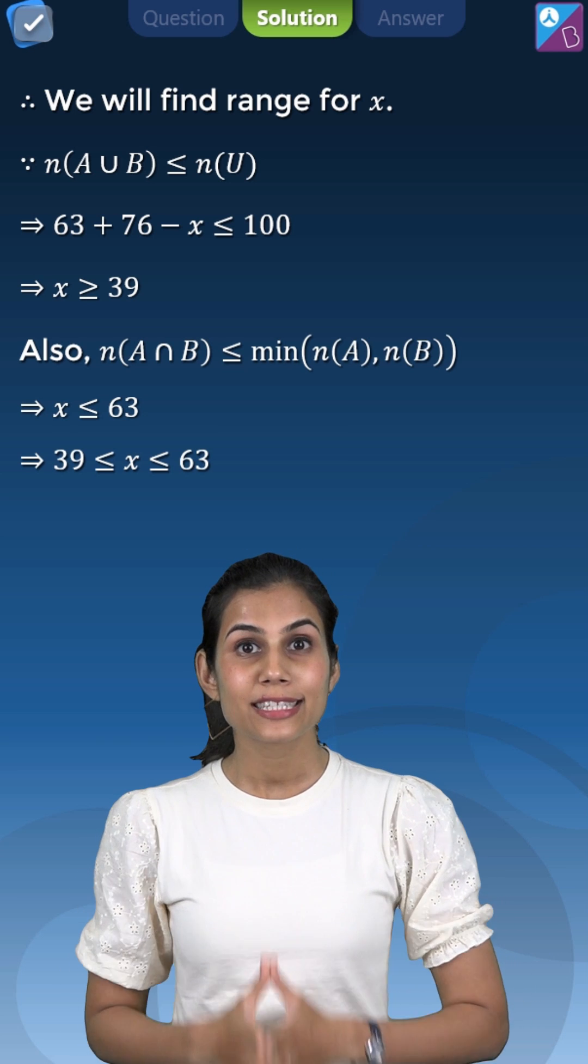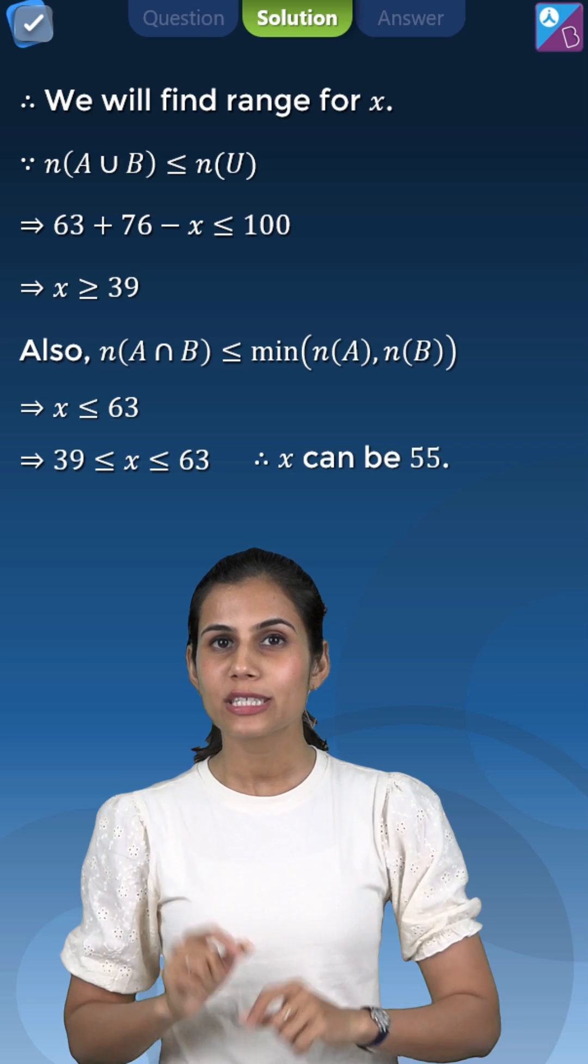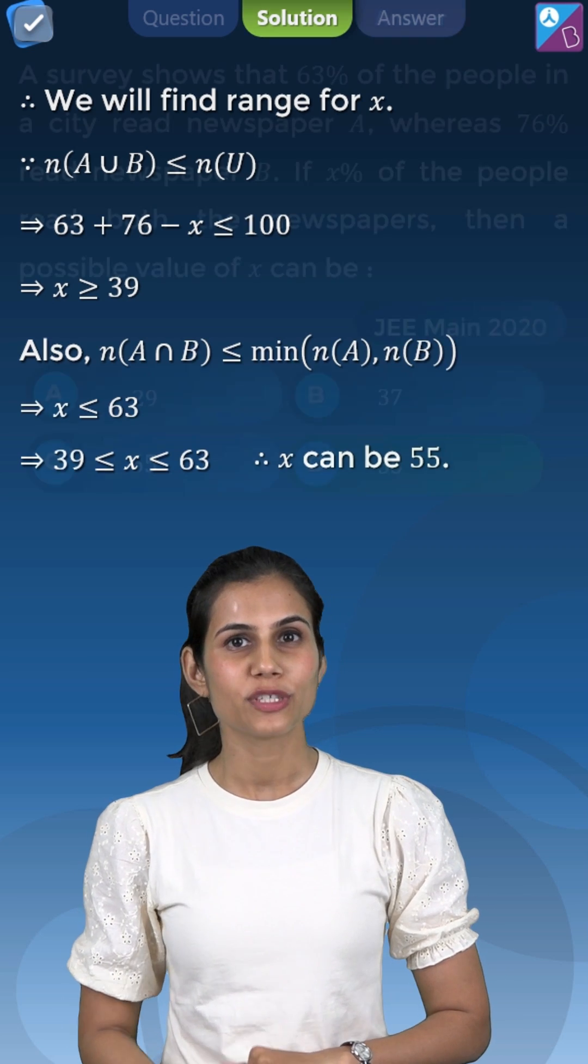So the range for X is the closed interval 39 to 63 which means that the possible value of X out of the given four options will be 55.